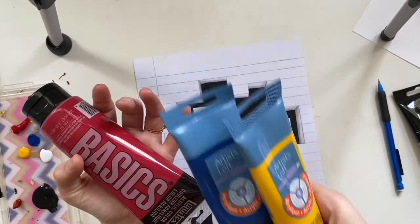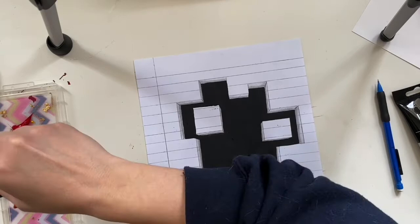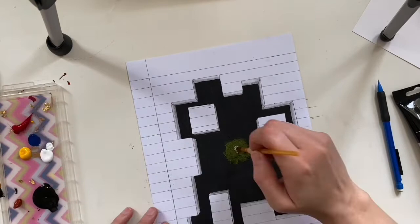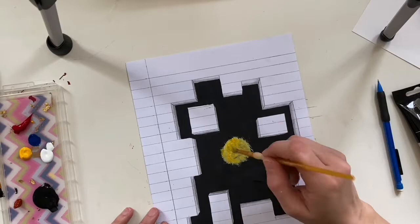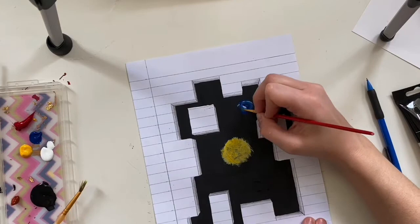All right. So now I'm using my three primary colors. Remember red, blue, yellow. Blue and yellow make green, red and yellow make orange, and blue and purple make purple. So you have basically all the colors of the rainbow if you just have those three colors.